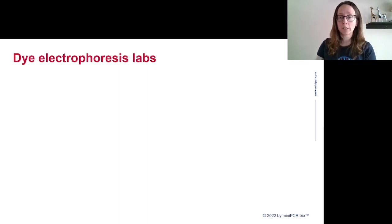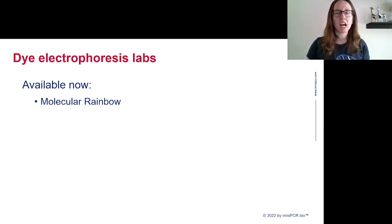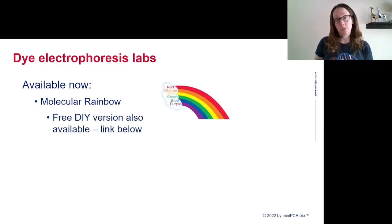We have one dye electrophoresis lab that's currently available and a bunch of others in the pipeline that will follow it. The one that's currently available is our Molecular Rainbow lab, which is an exploration of molecular properties, a great companion to the Bandit system. In this lab, students will explore how different properties of their samples—the number of different molecules they contain, the size of those molecules, and the charge of those molecules—will influence what they can observe during a gel run. We also have a free version of our Molecular Rainbow lab that doesn't require you to purchase anything. It teaches you how to make the dye samples just from household ingredients.